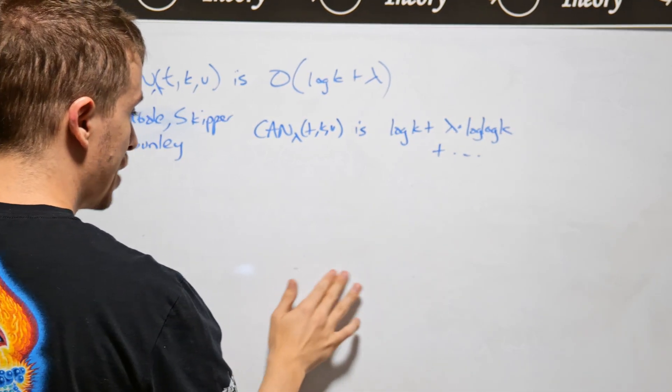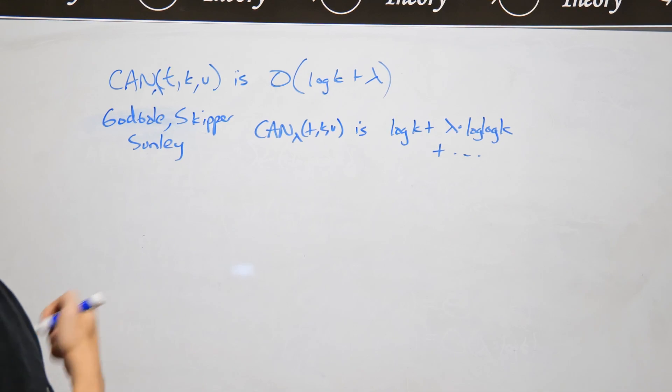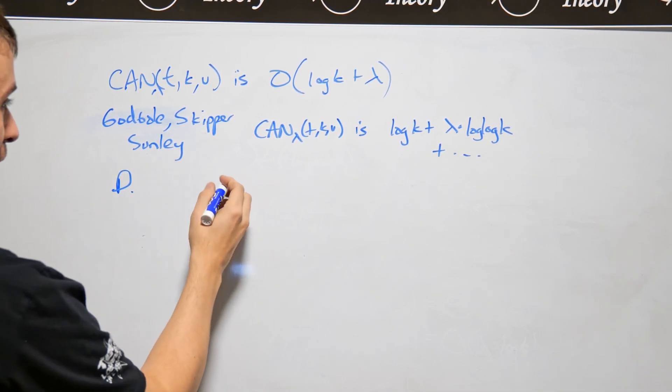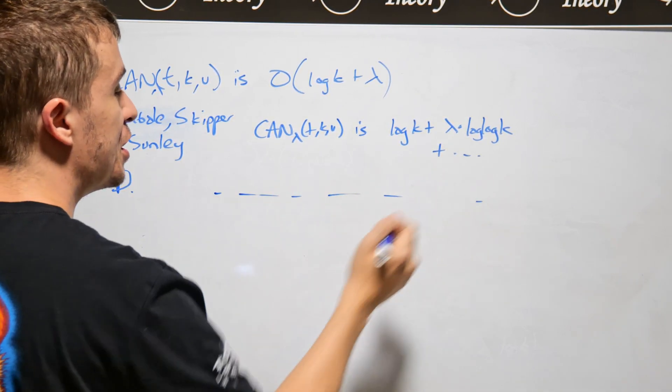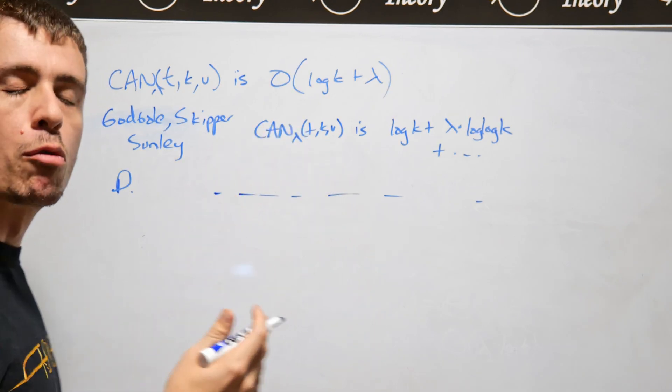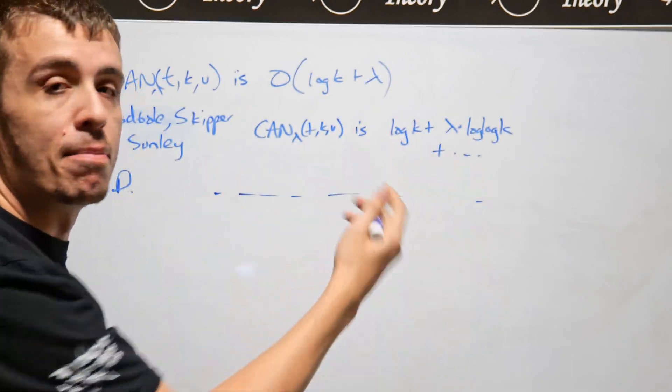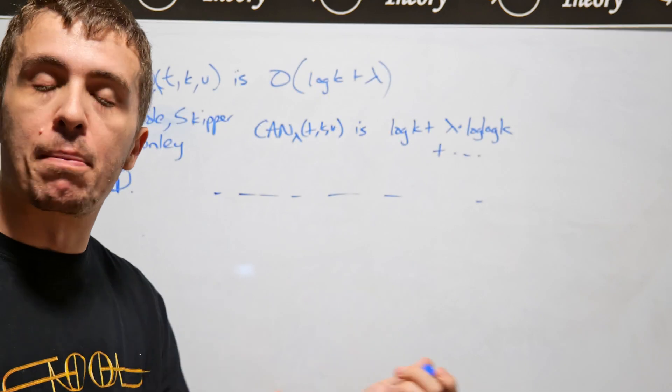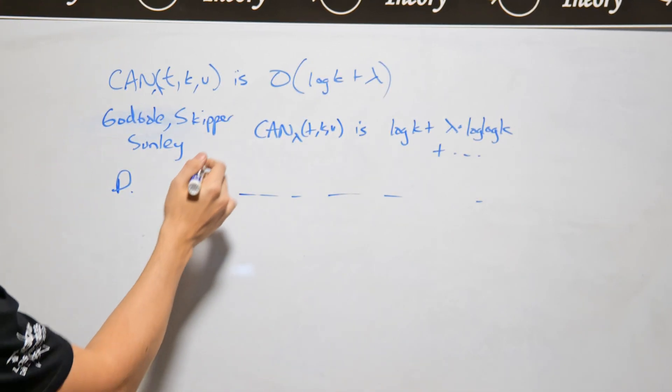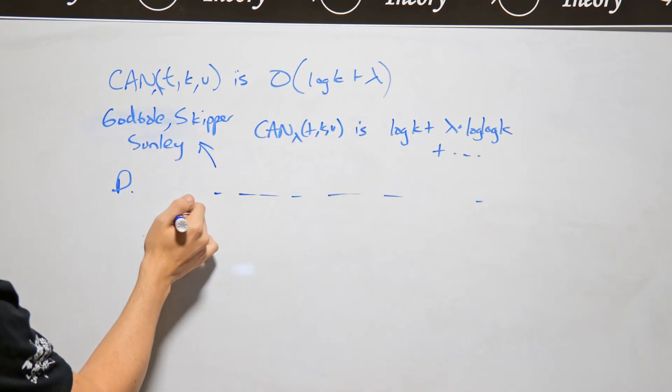And what I was able to show in my dissertation was that something very similar. So I didn't work with covering arrays specifically, but I got basically the same bound, but by a completely different method. And both of these, so GSS and me,